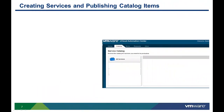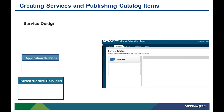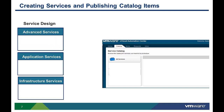Now that we understand a bit of the catalog terminology, let's look at how IT services are published and organized in the catalog. Service architects can define new services and publish them as catalog items. vCloud Automation Center has three service authoring engines that were optimized for designing infrastructure, applications, or custom IT services. How to author a service was covered in previous videos — refer to them if necessary.